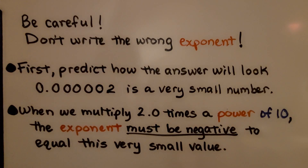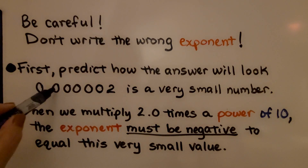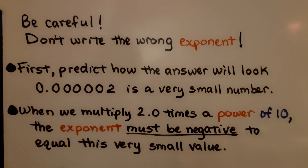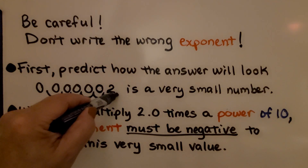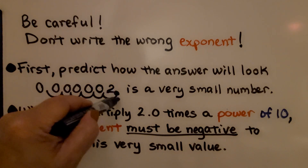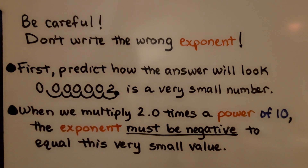Be careful — don't write the wrong exponent. First, predict how the answer will look. If we have 0.00002, that's a very small number. When we move the decimal point 1, 2, 3, 4, 5 places and multiply 2.0 times a power of 10, the exponent must be negative to equal this very small value.